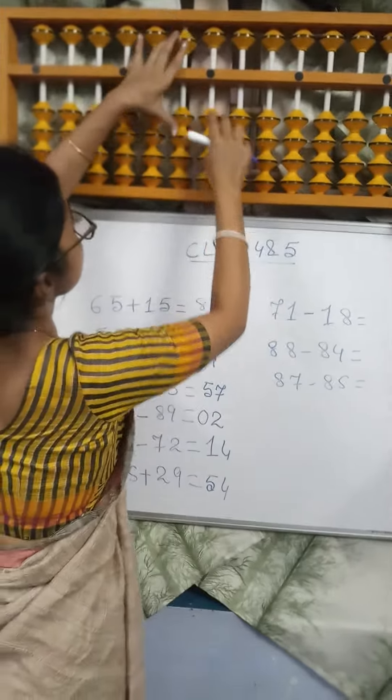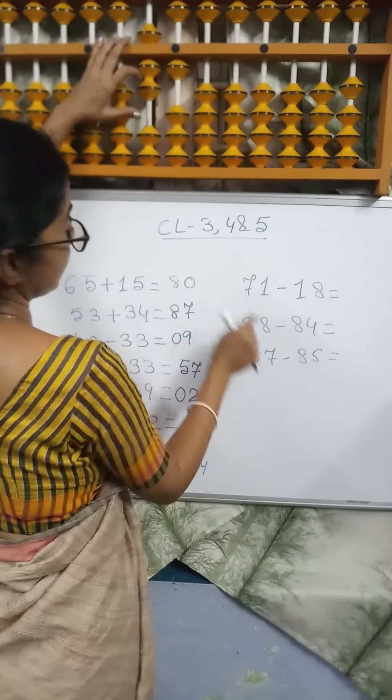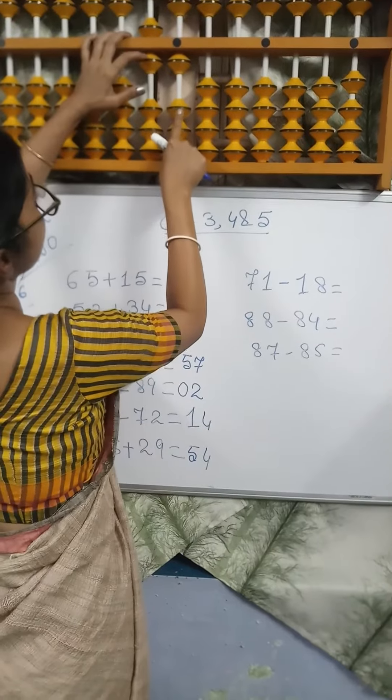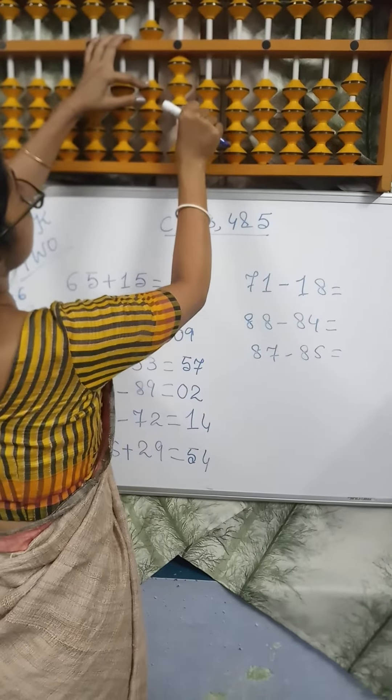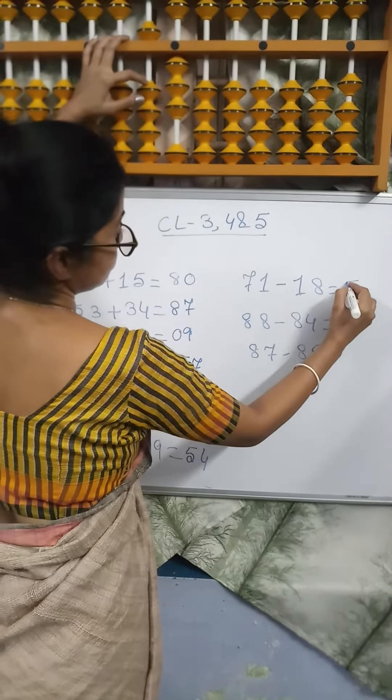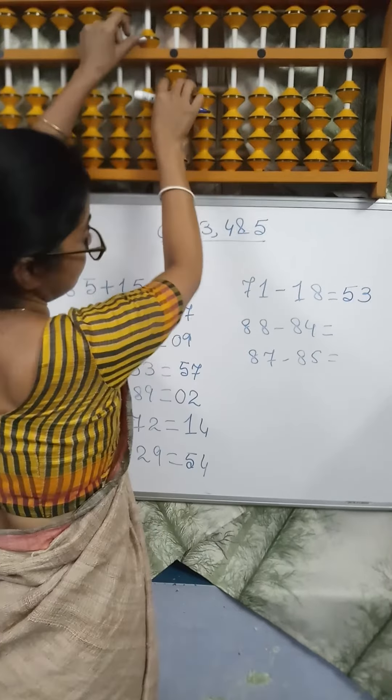Next sum. 71 minus 18. Minus 1, 4 minus 8, minus 10 plus 2. Answer is 53. Next sum.